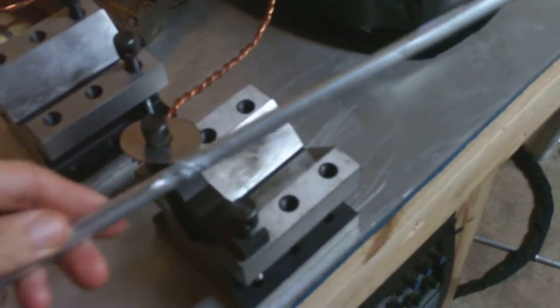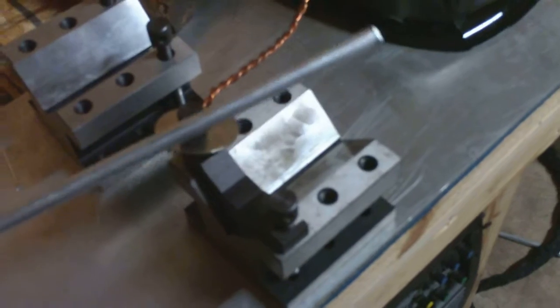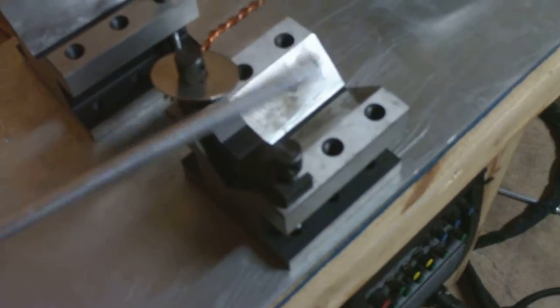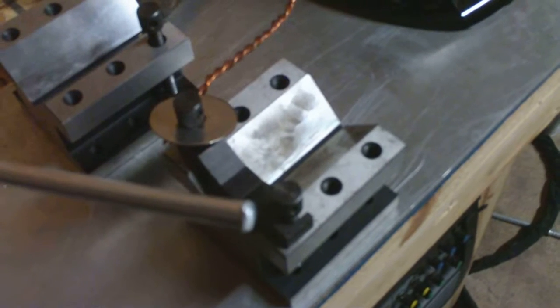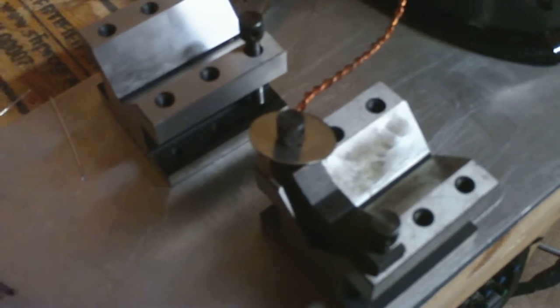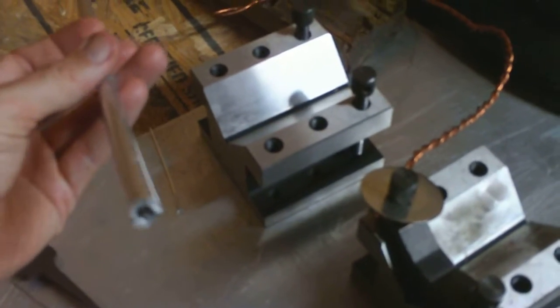I just wanted to do a quick video, hopefully quick anyway, on welding a thin aluminum tube. I've jumped on YouTube and looked at some welder sites and blogs, and most people don't really talk too much about this. They will talk about welding thin aluminum, usually though it's not tube.